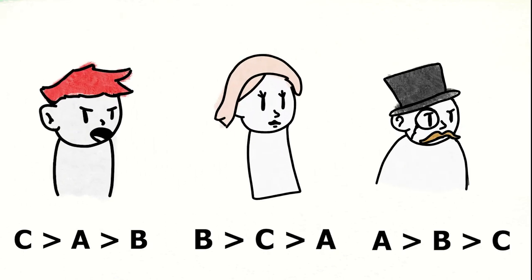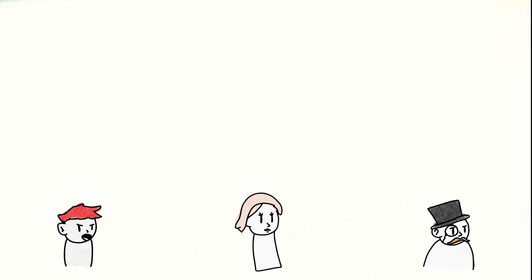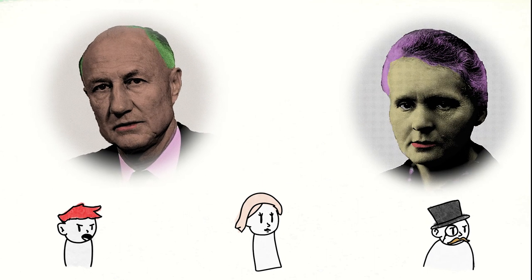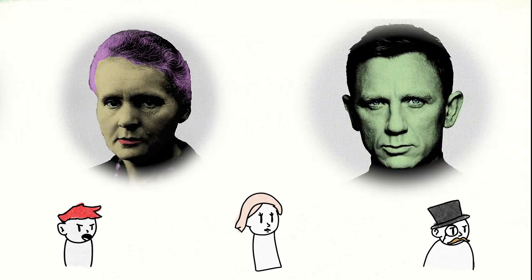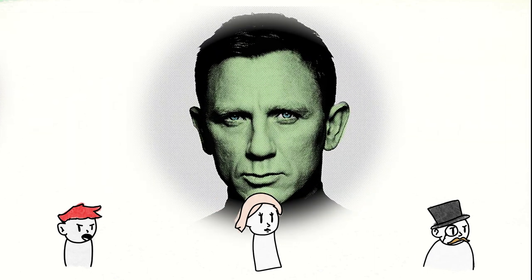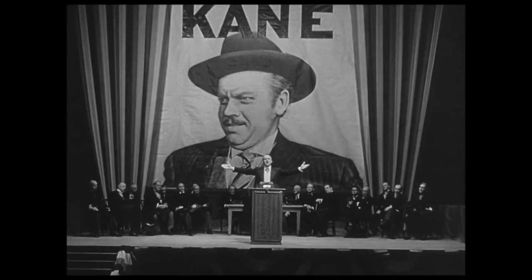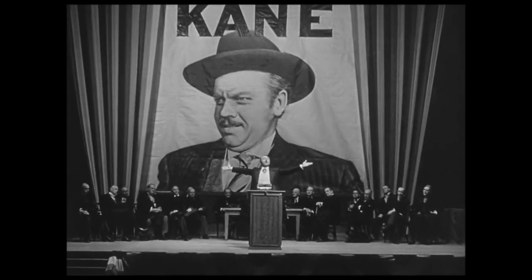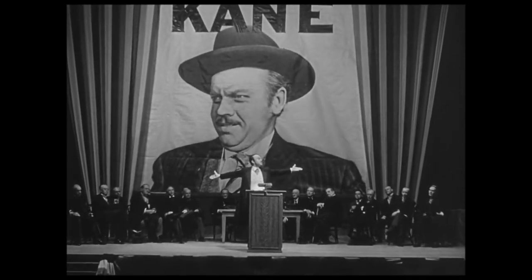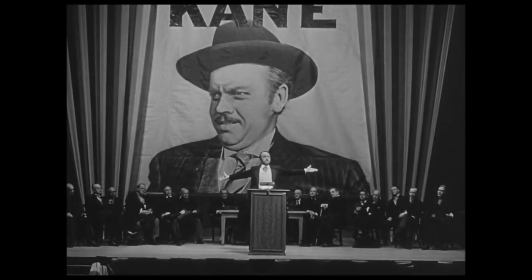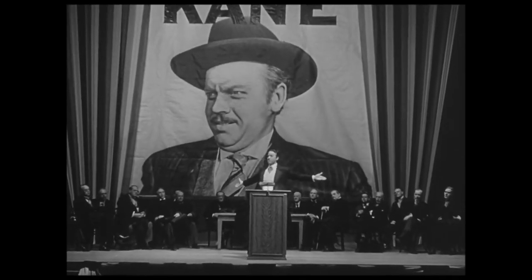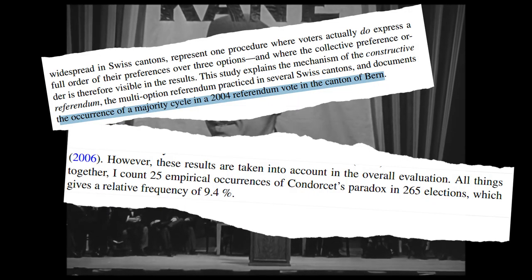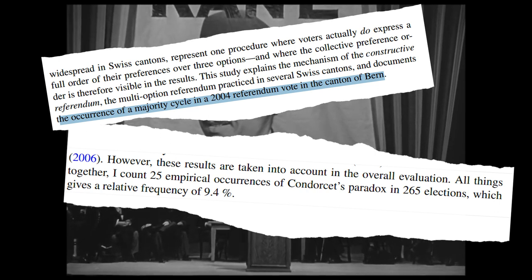However, two-thirds of the population prefer B over C. So if the first stage had been A against C, and then C against B, B would have won the election. This is the essence of the Condorcet paradox, and while it may seem contrived, some real-world elections have been shown to be a case of this paradox.